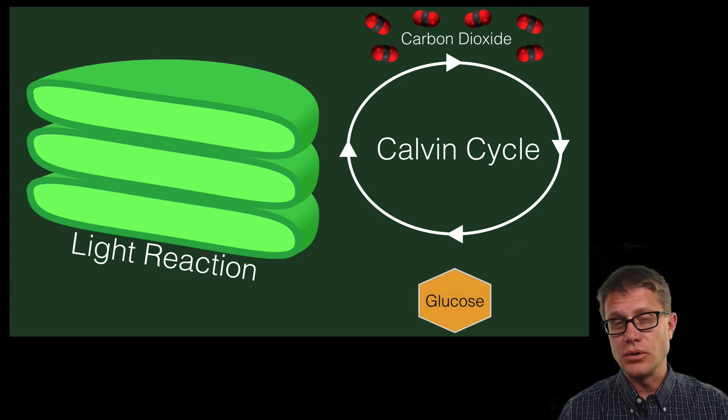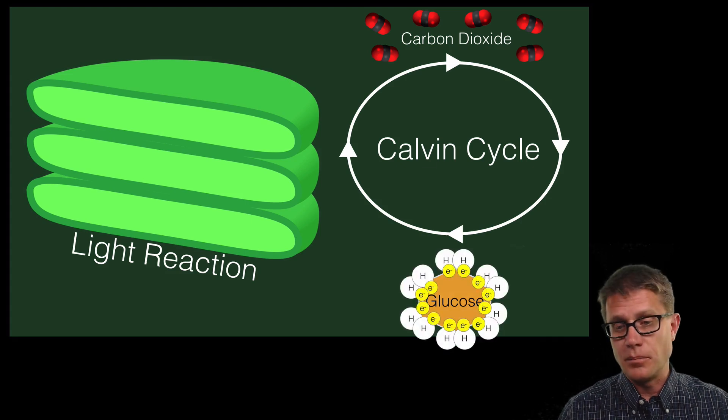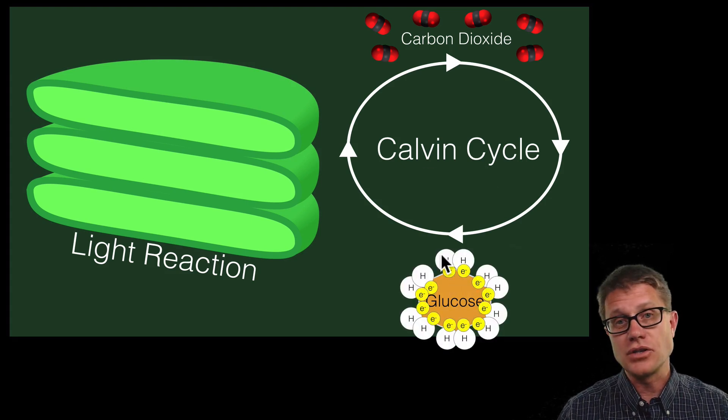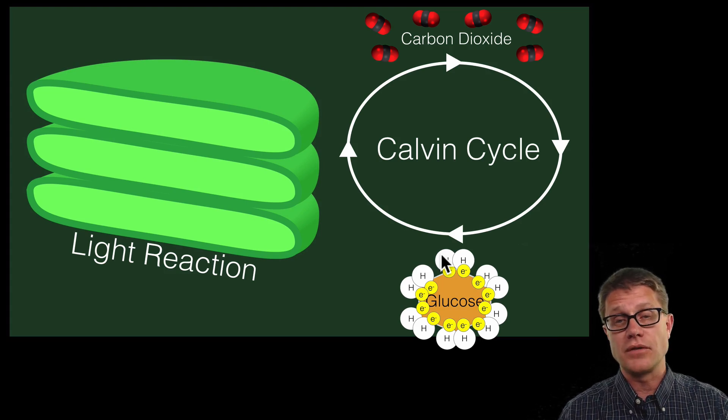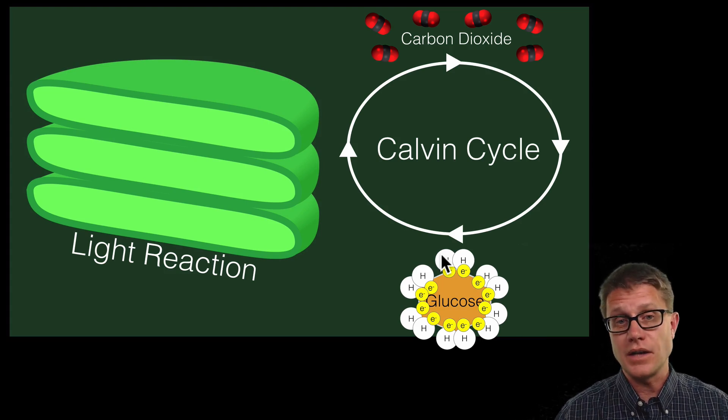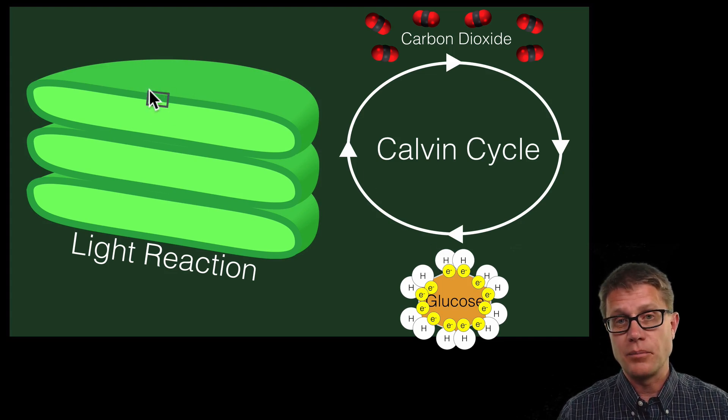When I say adding energy to it what do I mean? We are adding high energy electrons. And so there are bonds between the carbon and the hydrogen in glucose. And so we have to add energy to those electrons. Where is that energy coming from? Originally it is coming from the sun. Where does this all take place? It takes place along the thylakoid membrane.